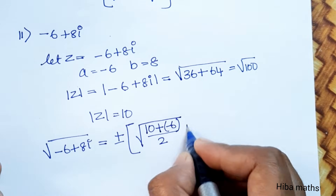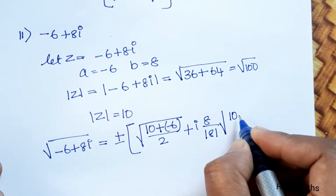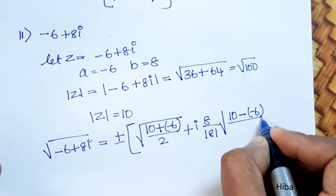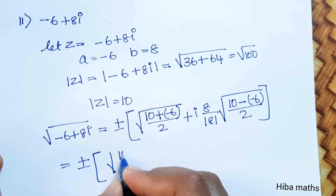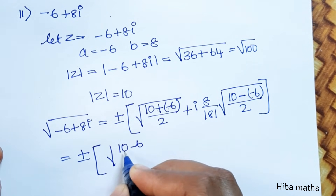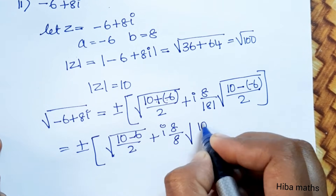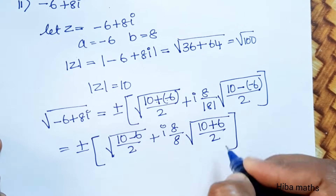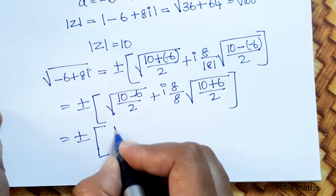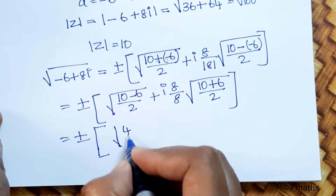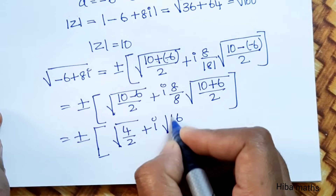Substituting: plus or minus root of (mod z + a) / 2, plus i times (b / |b|) times root of (mod z - a) / 2. With mod z = 10 and a = -6: root of (10 + (-6)) / 2 = root of 4 / 2, and root of (10 - (-6)) / 2 = root of 16 / 2.